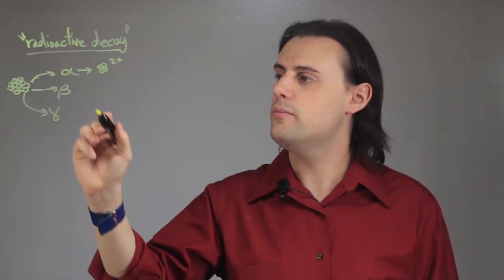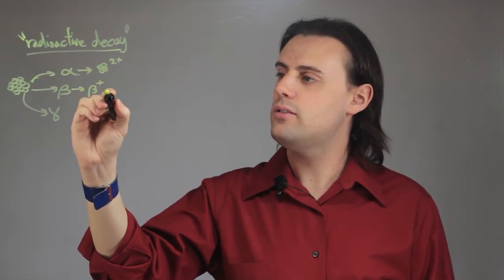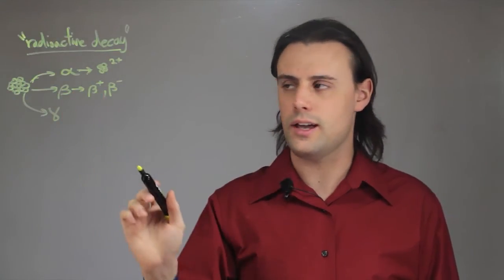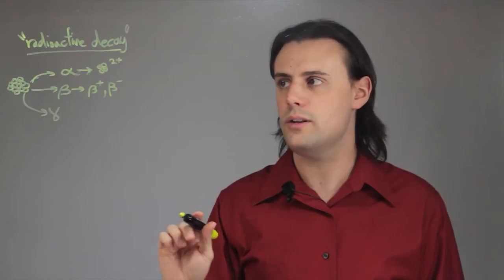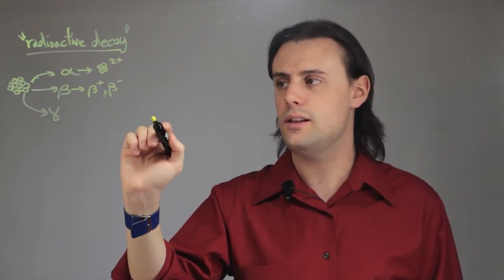The nucleus is unstable, and you can have either beta plus or beta minus decay. In alpha decay, the charged particle radiating away from the nucleus is the nucleus of a helium atom.